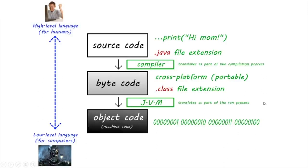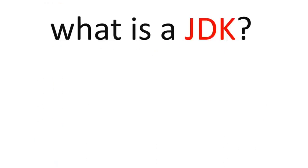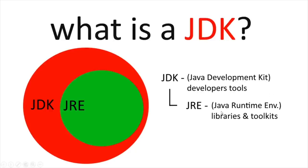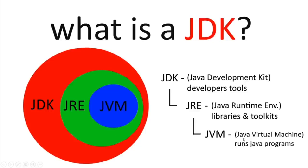But where can we get a JVM? It's included with a JDK. JDK is an acronym for Java Development Kit. It contains developer's tools to help us code, as well as a JRE — a Java Runtime Environment — which contains a library, toolkits, and our JVM, which stands for Java Virtual Machine, which translates bytecode to machine code. So all you need to worry about is downloading a JDK, and everything else will be included.